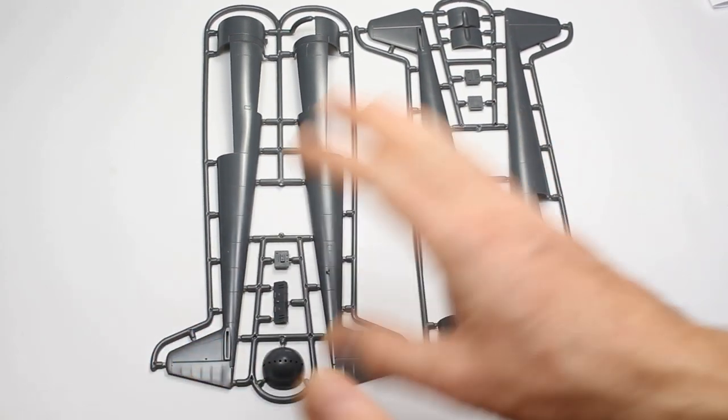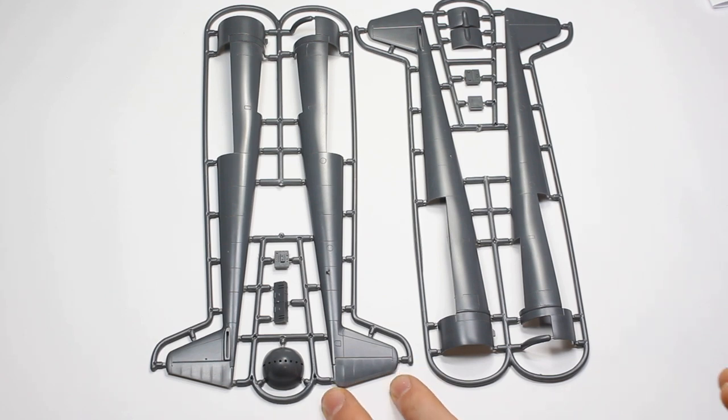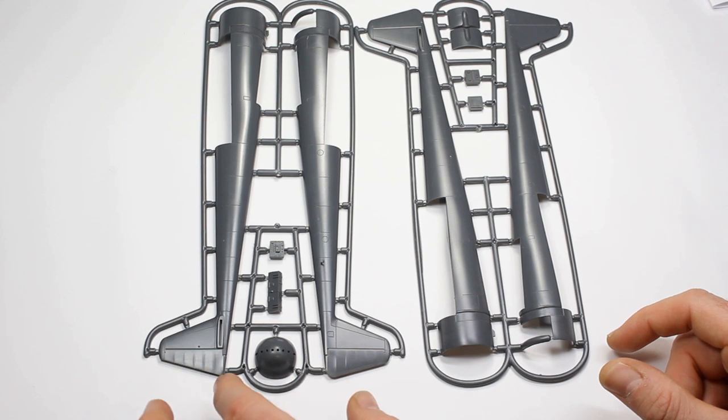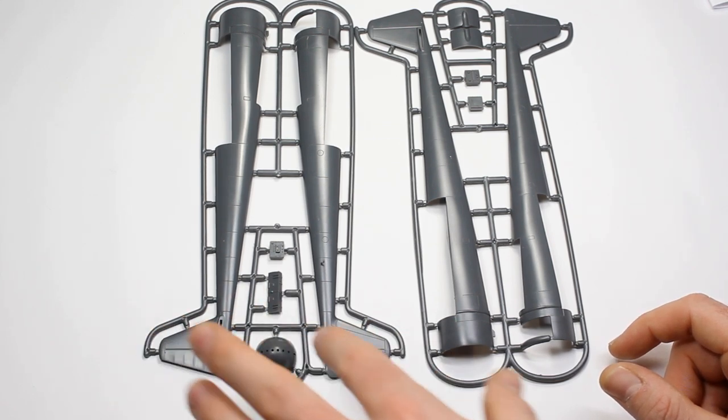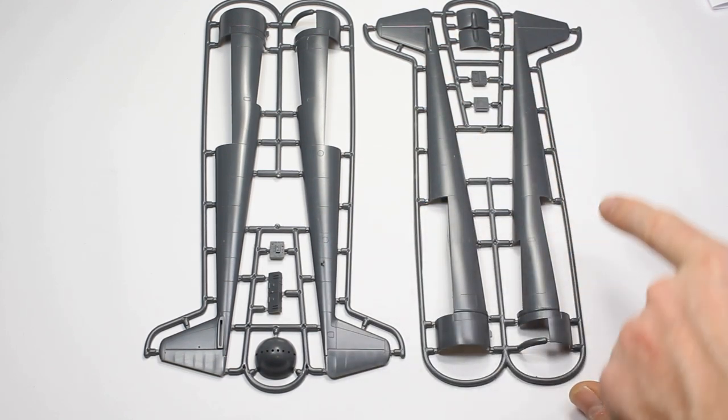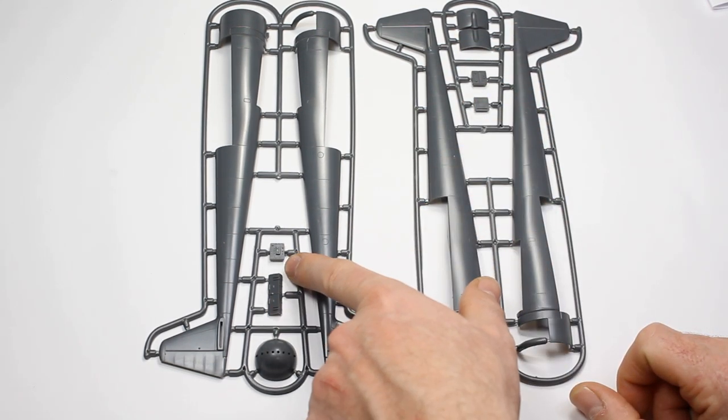Then we've got the tail boom sections. Again, fine panel lines going all the way down there, no flash whatsoever, very crisply molded, nice and smooth, very polished on the outside. We've got the nose end here with all the gun barrels with the holes—it looks like quite a mean aircraft coming straight at you.